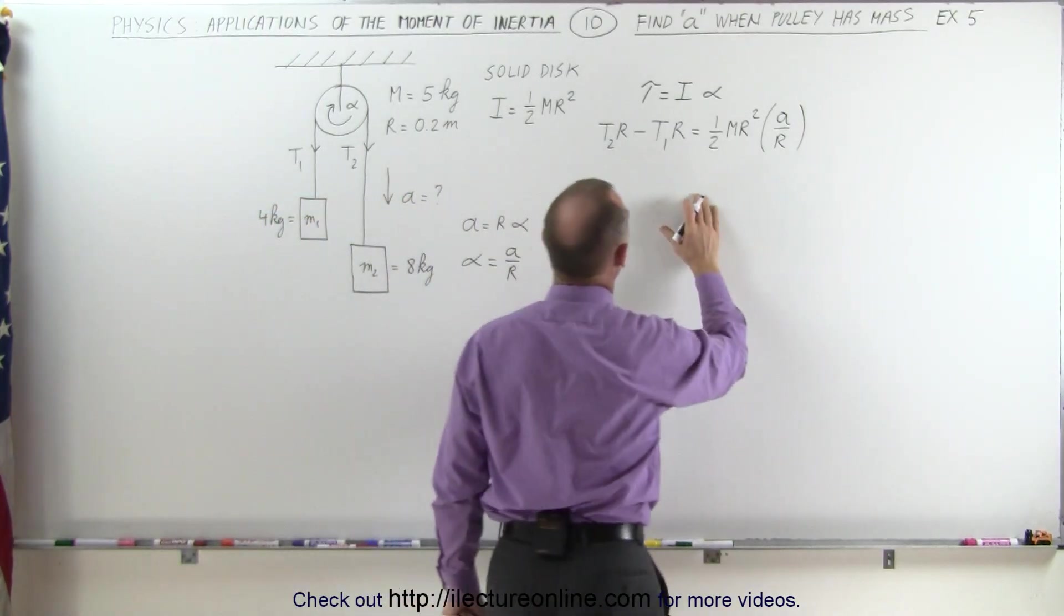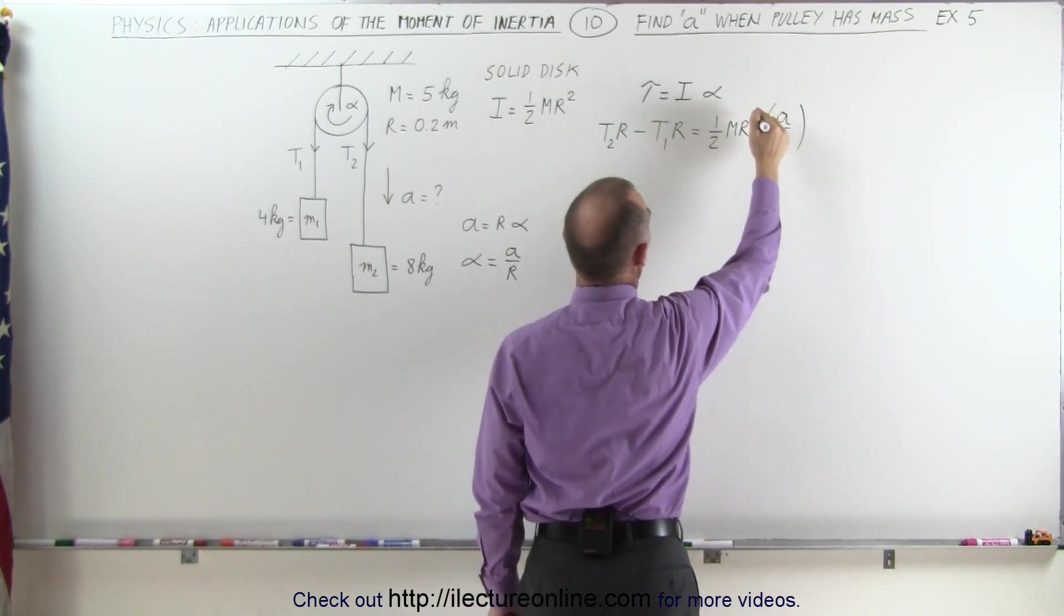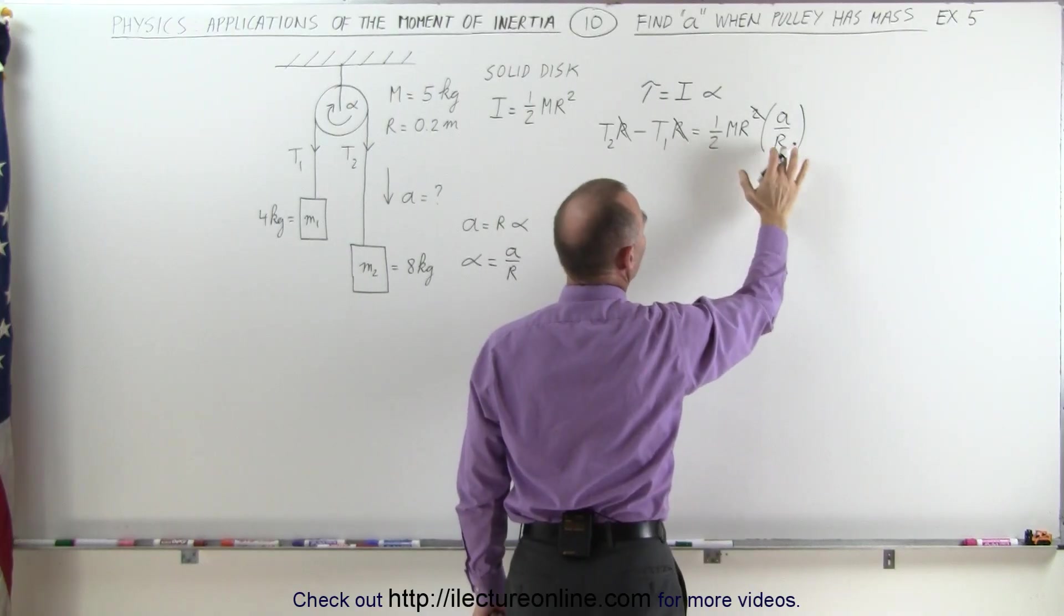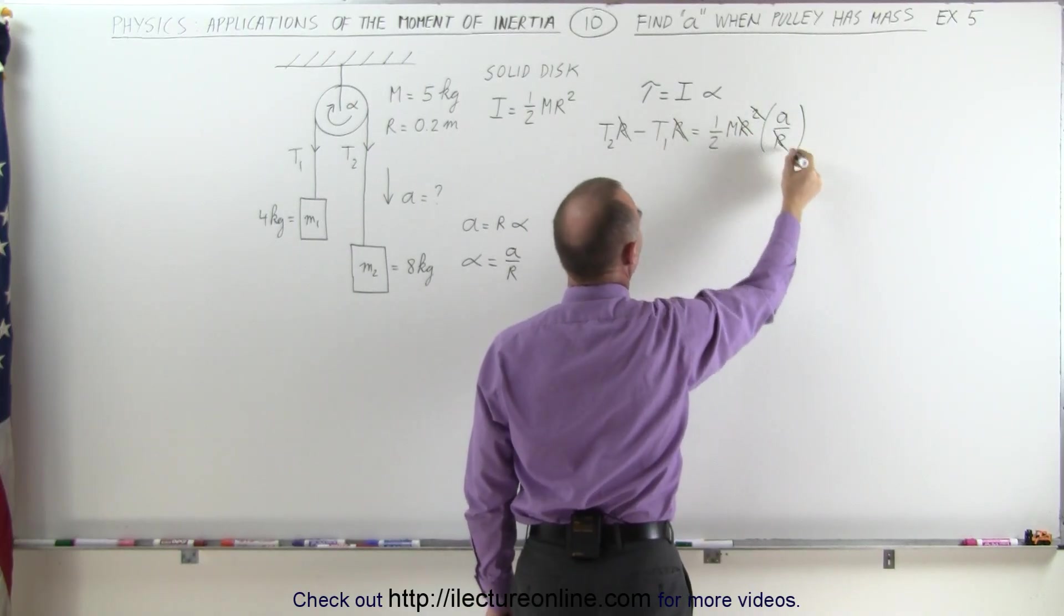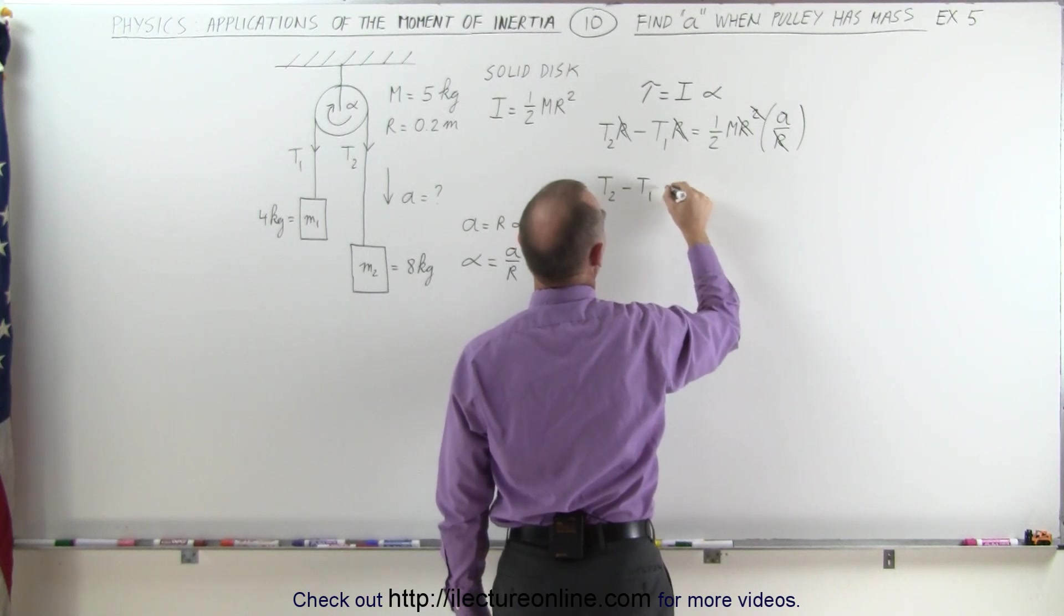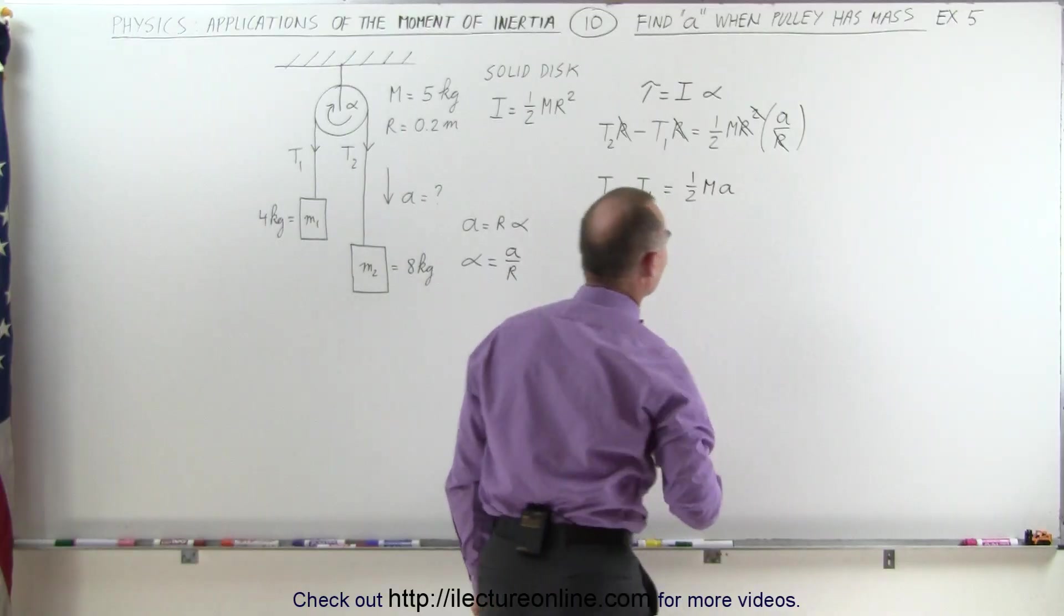Again, we're going to simplify this by realizing on the left side we have an R that cancels out with one of the R's on the right side. And this R in the numerator cancels out this R in the denominator. And the equation then becomes T2 minus T1 is equal to 1 half times the mass of the pulley times the acceleration of the system.